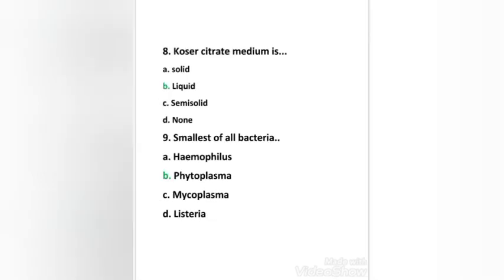Next question: Coarser citrate medium is — solid, liquid, semi-solid, or none? The right answer is option B, liquid. Citrate agar is used for differentiating gram-negative bacilli on the basis of citrate utilization. Simmons citrate agar is a solid medium, and Coarser citrate medium is liquid in nature.